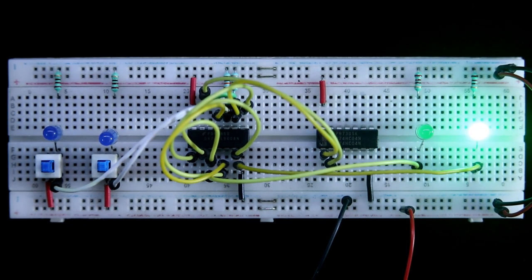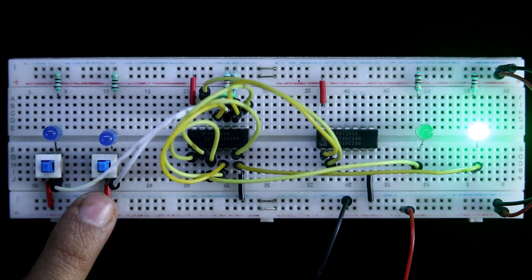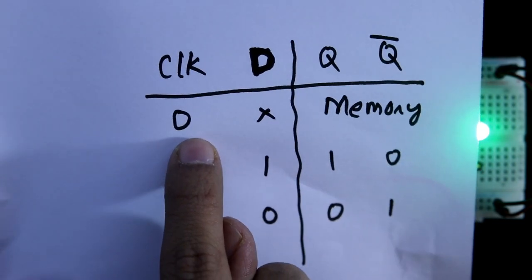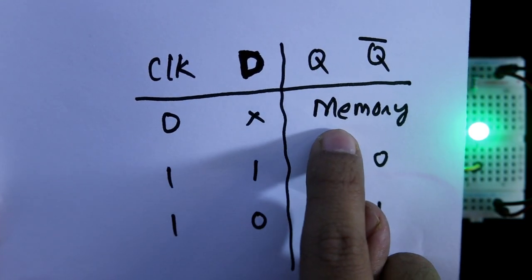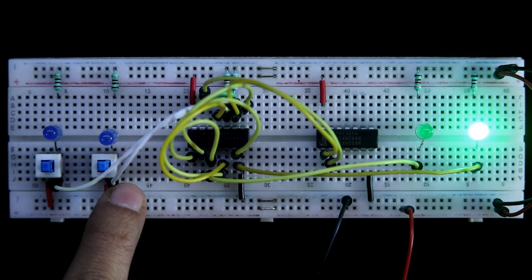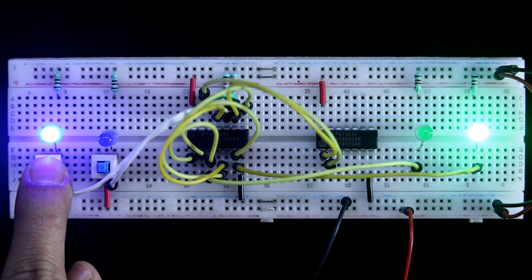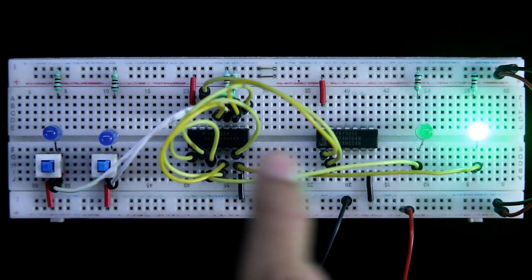This is what initially we are getting: D zero, clock zero. When clock is zero, it doesn't matter whether D is zero or one, the output will be memory. Now clock is zero, it doesn't matter whether D is one or zero, this will be the memory.